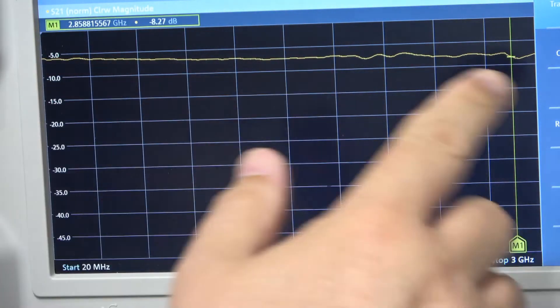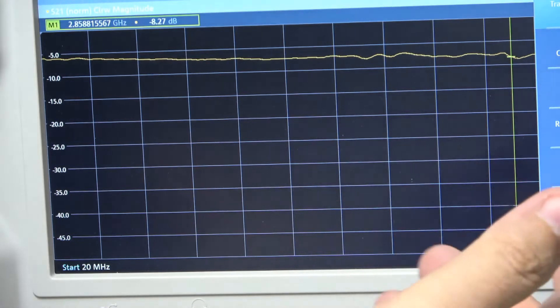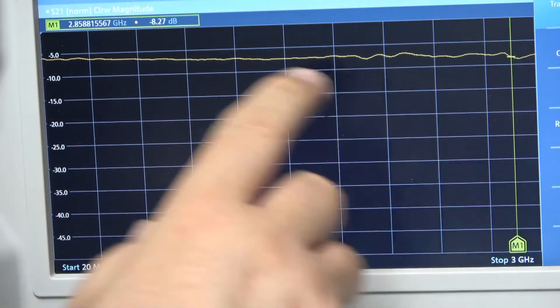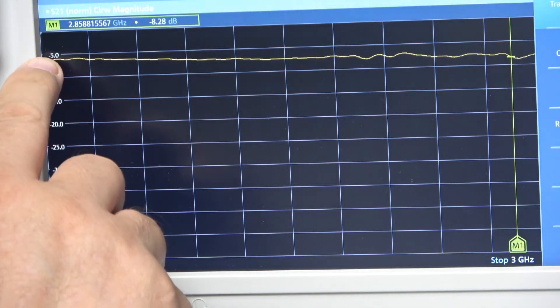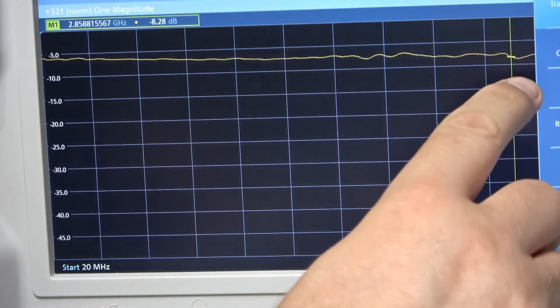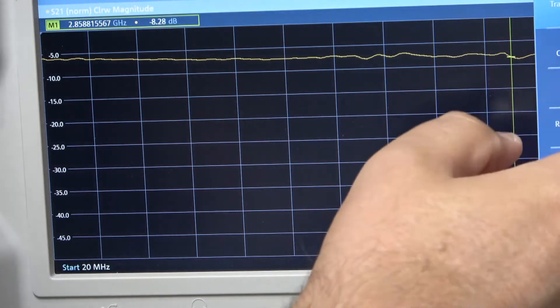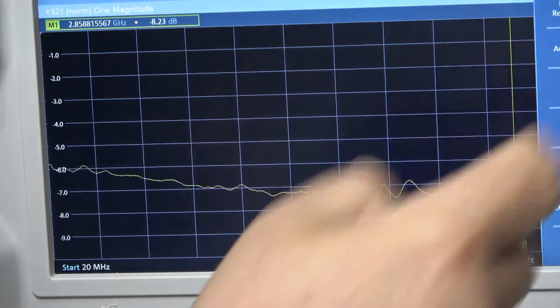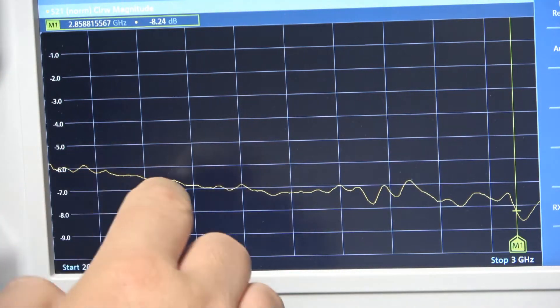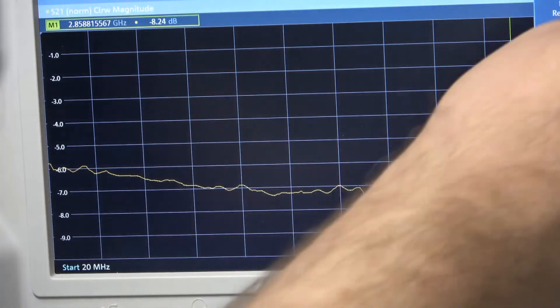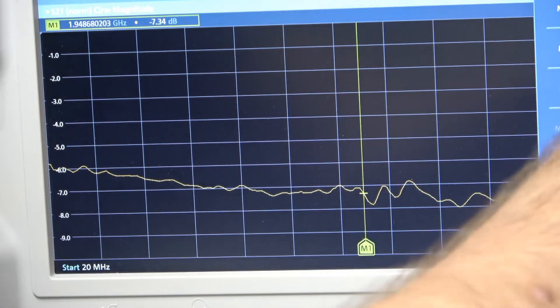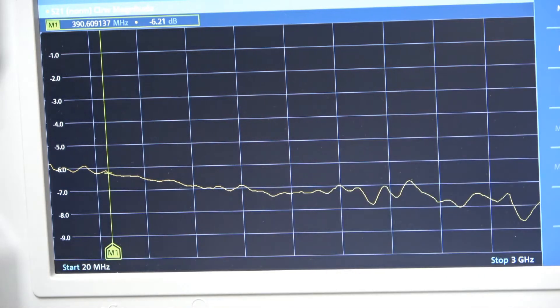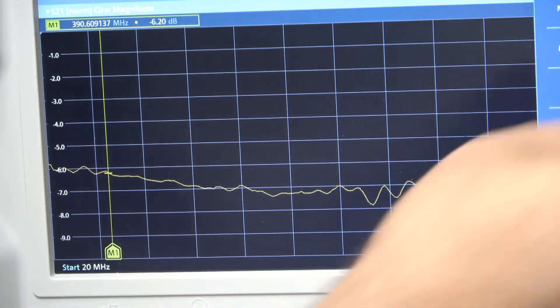Here's our S21 which is our through. Our forward direction transmission should be minus 6dB across the frequency range and we can see minus 5, minus 6 by the looks of it running down to quite a lot below. I'm just going to auto scale that so we can see it a bit better. We start at 6dB.